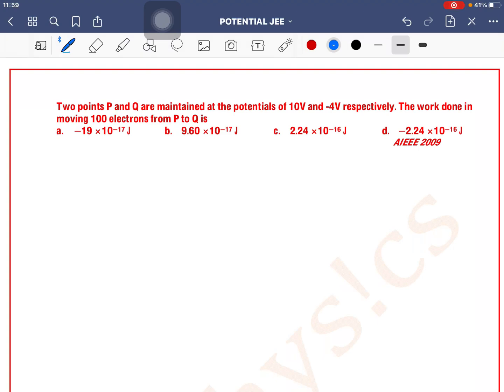Two points P and Q are maintained at the potential 10 volt and minus 4 volt respectively. The work done in moving 100 electrons from P to Q is... You have point P, you have point Q. Point P ka potential is VP is 10 volt, VQ is minus 4 volt.